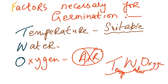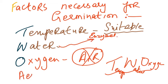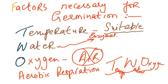Temperature is needed for enzymes, water is also needed to mobilize enzymes, and oxygen is needed for aerobic respiration. Aerobic respiration releases energy, and this energy is necessary for the growth of the seed.